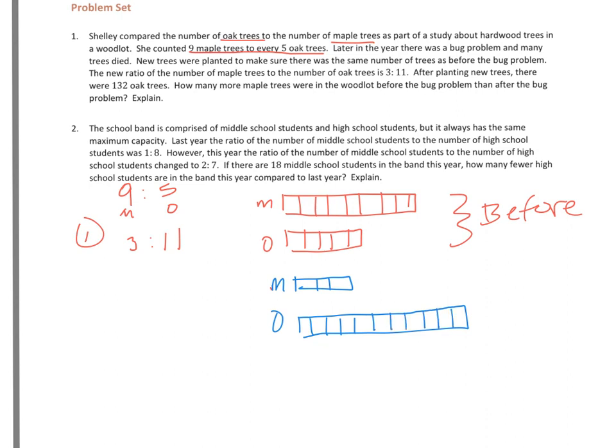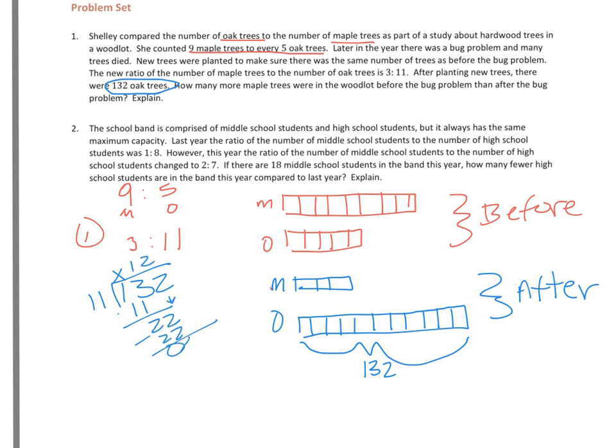And the big thing that it says here is after planting the new trees, there were 132 oak trees. So I know that this is after they planted. Meaning that amount is worth 132. I have 11 units that equals 132. So I'm going to take 132 and divide it by 11, and I'm going to end up with 12. So that's how much each of those units are worth.